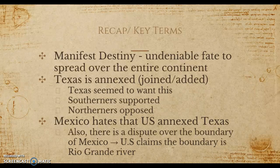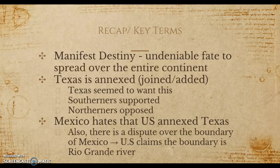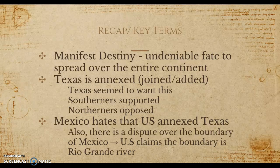In addition, there is a dispute over the boundary of Mexico. The United States claimed the boundary is the Rio Grande River, whereas Mexico claimed it's the Nueces River. The Nueces River is further north, which would give Mexico more of Texas. The Rio Grande is further south, giving America more of the land. It's really this boundary issue that starts the war, because President Polk sent troops down into the disputed area between the Nueces and Rio Grande, and Mexico told them to get out.